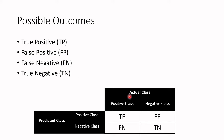Now if we only look at the actual class and the positive class — everyone who has the disease — if the model was correct and predicted someone as positive, then we refer to that as a true positive sample.